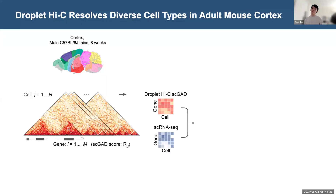It was previously reported that highly expressed genes tend to have more frequent interactions within a gene body region, and are likely to form a structure called a gene-associated domain, or GAD. This means that if we calculate a GAD score for genes, which represents the sum of the interactions within a gene body, we can get an approximation of the gene expression level.